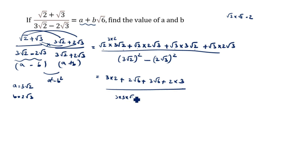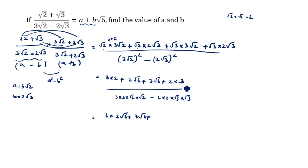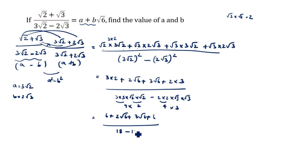For the denominator, we compute 3 squared times root 2 squared minus 2 squared times root 3 squared, which is 9 into 2 minus 4 into 3, giving 18 minus 12. Combining the numerator: 6 plus 6 is 12, plus 2 root 6 plus 3 root 6 gives 5 root 6. So the numerator is 12 plus 5 root 6, divided by 6.